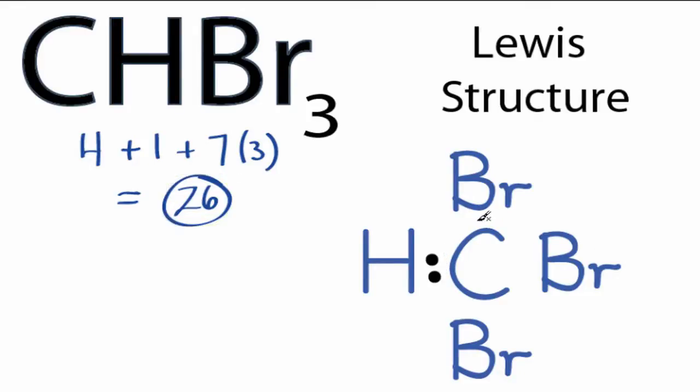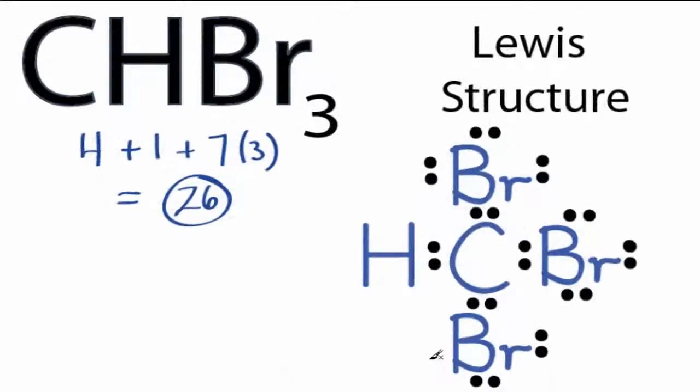We'll put 2 between atoms to form chemical bonds. We've used 8 valence electrons, and then we'll go around the bromines to complete their octets, or until we use 26 valence electrons. So we have 8, 10, and 26 valence electrons.